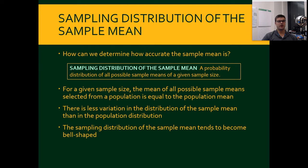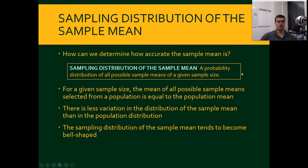There is less variation in the distribution of the sample mean than in the population distribution. And the greater, or the larger, the sample is, the less variation there is. The sample mean is bell-shaped, or approaches bell-shaped — the more normally distributed the distribution is — the greater the sample is.